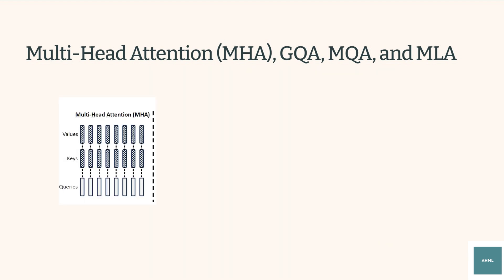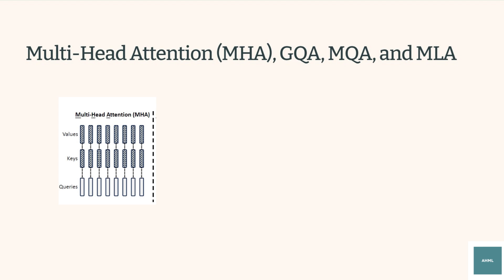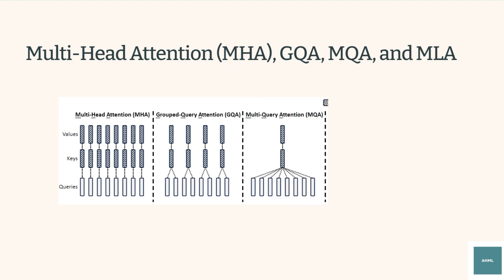The standard multi-head attention in transformers suffers from high KV cache requirements, which create an inference bottleneck. Approaches like grouped query attention and multi-query attention reduce cache size but compromise performance.